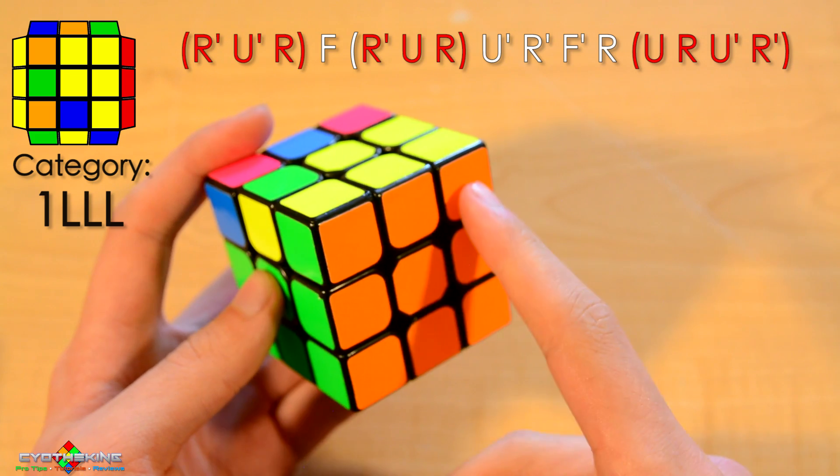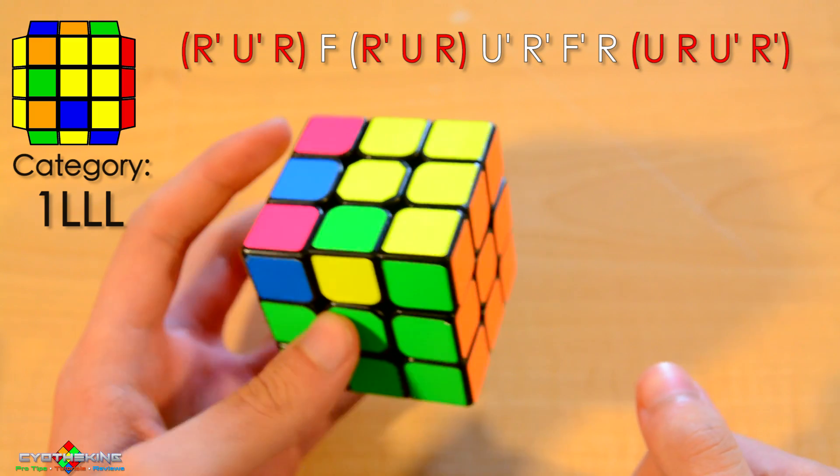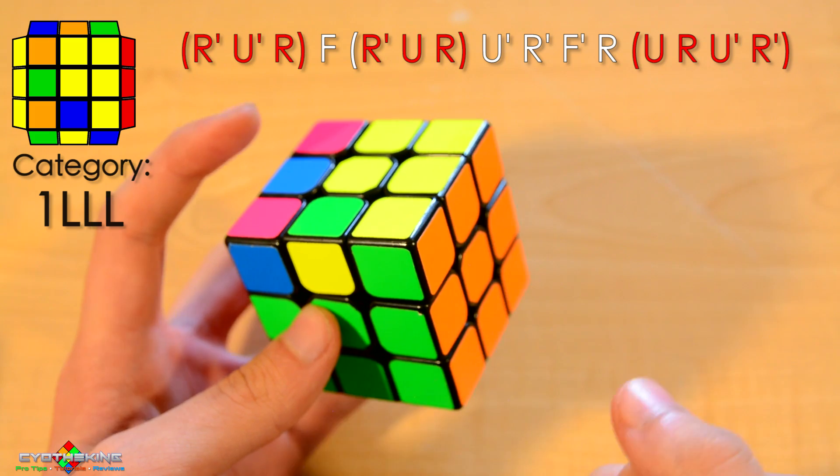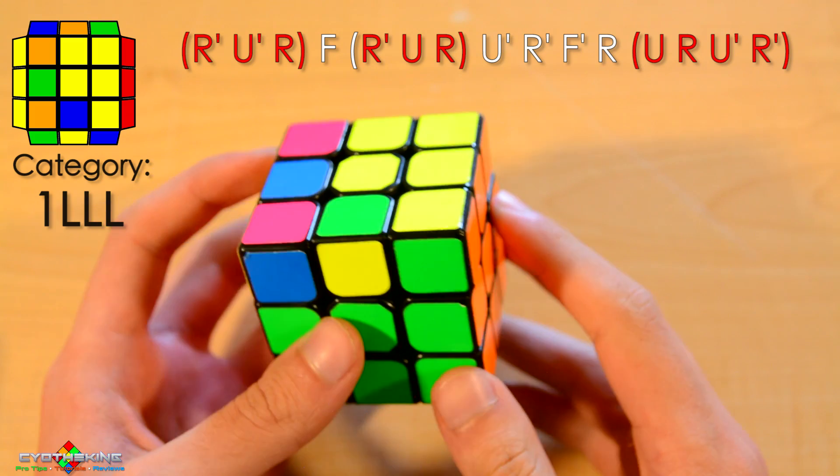And then you have a 1x1x3 line right here and then two opposite edges here. So it's pretty easy to recognize - you just recognize CP like normal, you have a line here and then two opposite edges there.